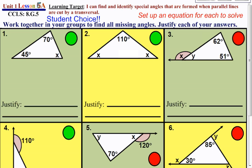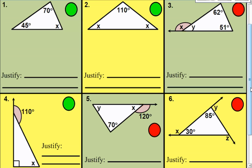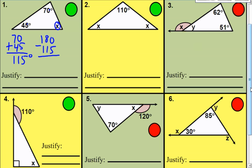Let's put this into practice. Number one gives you two angles of a triangle but you're missing one. I'm going to add the two known angles together: 45 and 70 gives me 115 degrees. Since the triangle must total 180 degrees, the missing angle is 180 minus 115, which is 65 degrees.